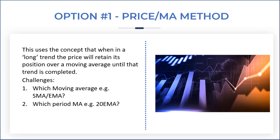The second challenge is which period moving average you use — for example, do we use the 20 EMA? The third challenge is when to trigger: a close of the candle, or any time. Remember, if you are putting a physical stop on the system including a trail stop, it's an anytime touch. If you want to do it on the close of the candle, you're going to have to check in at every candle.